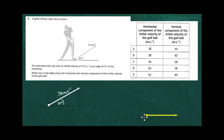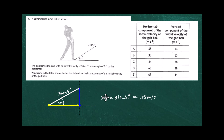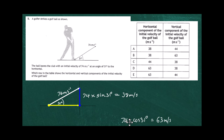Breaking the vector into components: the vertical component is 74 times sine of 31 degrees, giving 38 meters per second to two significant figures. The horizontal component is 74 times cosine of 31 degrees, giving 63 meters per second to two significant figures. A useful memory aid: sine for the vertical component because it's in the air, cosine for the horizontal component along the ground.